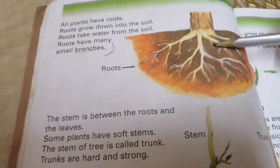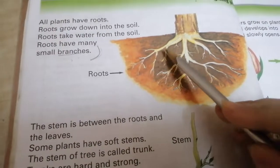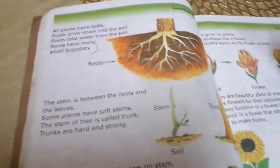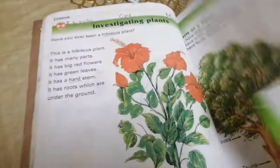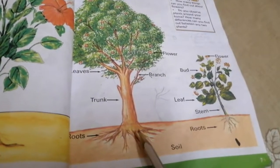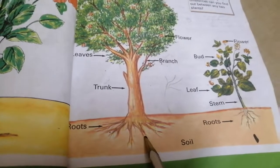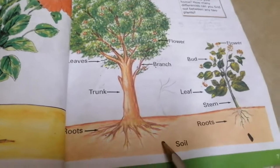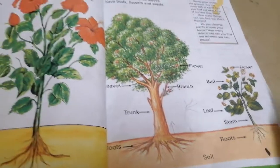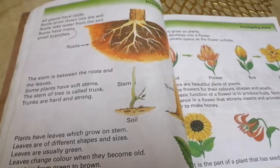Roots have many branches. Now we will learn roots, then we will learn parts of plants, and we will learn hibiscus plants. Roots are growing in the soil and they give water to the other parts of the plants. You have to read the difficult words three times.